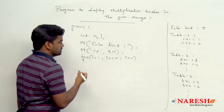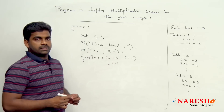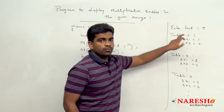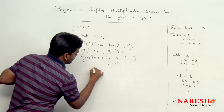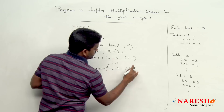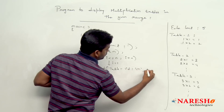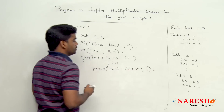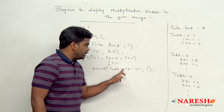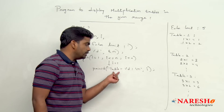The outer loop: i value starts with 1, i is less than or equal to n, i plus plus. Once control comes inside with i value 1, we display the message 'table 1' using printf with percentage d, sending the i value. In the next iteration i becomes 2, so table 2, like this.